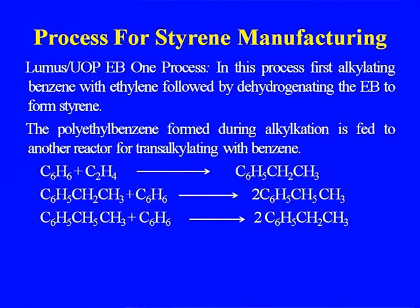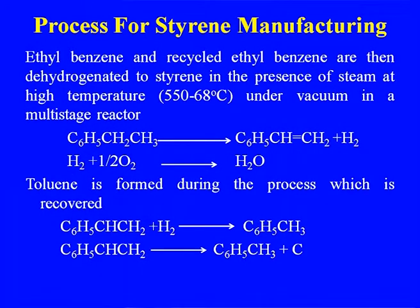Higher polyethyl benzene is converted back to ethyl benzene via transalkylation. Ethyl benzene and recycled ethyl benzene are then dehydrogenated to styrene in the presence of steam at 552–568 degrees centigrade under vacuum in a multi-stage reactor. Toluene is also formed in the process and recovered.